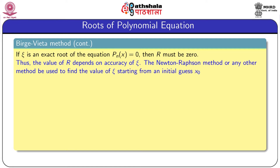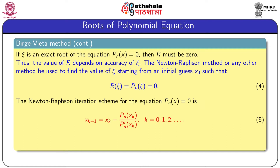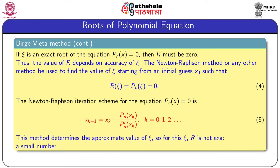The Newton-Raphson method or any other method may be used to find the value of ψ starting from an initial guess x_0 such that R(ψ) = P_n(ψ) = 0. The Newton-Raphson iteration scheme for P_n(x) = 0 is: x_(k+1) = x_k − P_n(x_k) / P_n'(x_k), for k = 0, 1, 2, .... This is the iteration scheme to find a root. This method determines an approximate value of ψ, so R is not exactly 0 but is very small.